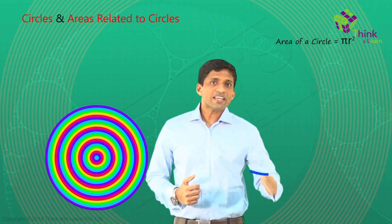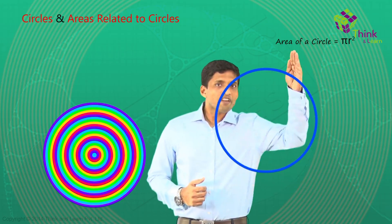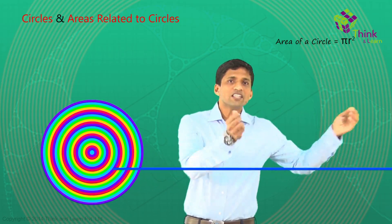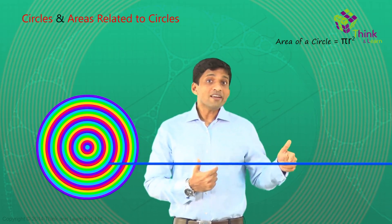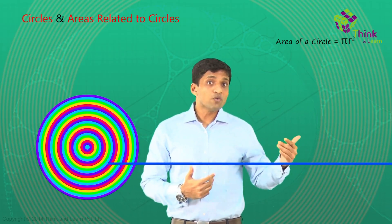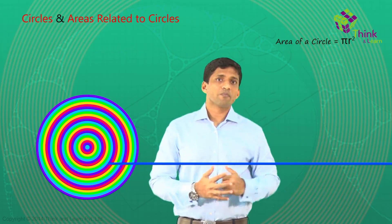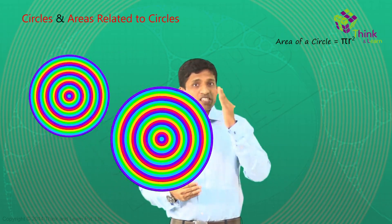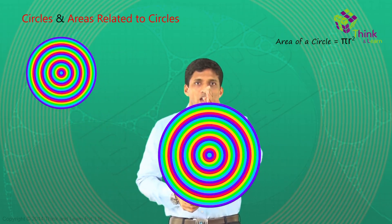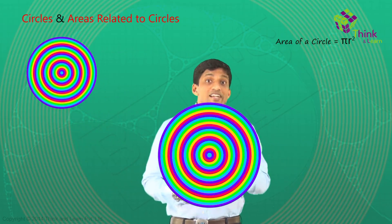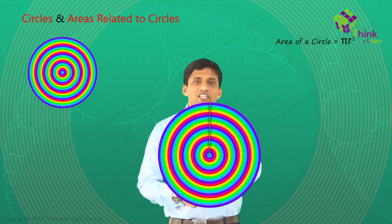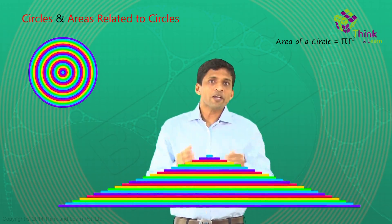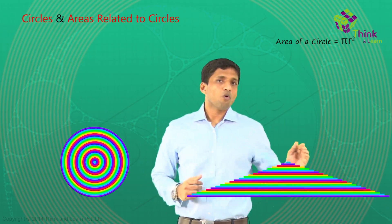Now let's consider the other extreme. If I take a single circle here, if I cut the circle and straighten it out, I'll get a straight line. A line can be taken as a circle with infinite radius. If I use the same method here with the set of concentric circles — you can see the colorful circles — if I just cut here and open it up, what's going to happen?